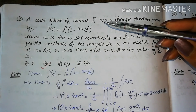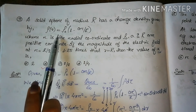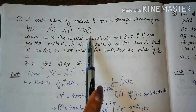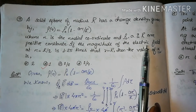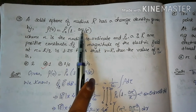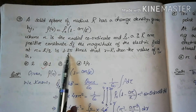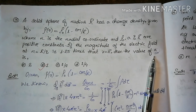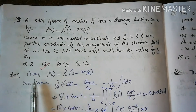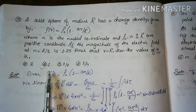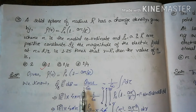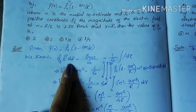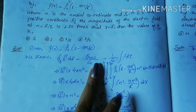The next question: a solid sphere of radius R has charge density ρ(r) = ρ₀(1 − ar/R), where ρ₀, a, and R are positive constants. The magnitude of the electric field at r = R/2 equals 1/1.25 times the electric field at r = R. We have to find the value of the constant a. Using Gauss's law: ∮E·dA = Q_enclosed/ε₀, where Q_enclosed = ∫ρ dτ.